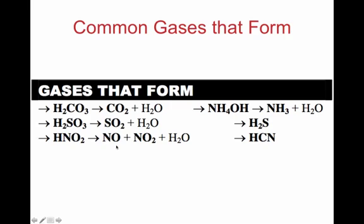If you have a nitrite reaction, you're going to end up with nitrogen monoxide (NO) or nitrogen dioxide (NO2) plus water. If you're dealing with ammonium hydroxide (NH4OH), it's going to break down into ammonia (NH3) and water. If you see H2S as a product, that's going to be a gas, as well as HCN (hydrogen cyanide). These are common gases that you see formed.